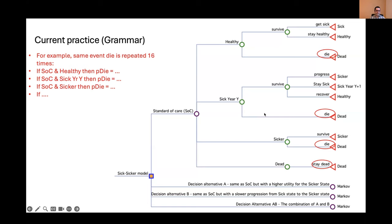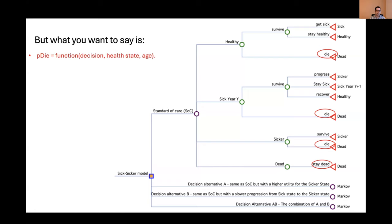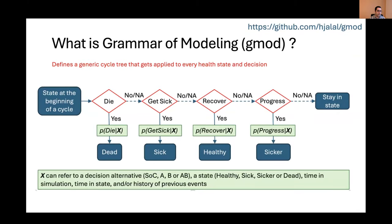The problem is that it's not just here — every single strategy repeats things that are almost, I would guess, 90% exactly the same. For example, decision alternative A is the same as standard of care, but you have a higher utility for the sicker state — and for that, the whole thing repeats. You can argue that you can make functions, but then at some point it becomes too complicated. The grammar of modeling was a way to consolidate this amount of information and make it simpler to communicate and represent. At the core of it is what we call a generic cycle tree. Instead of having all these branches from all the states and decisions, you only have a single sequence.